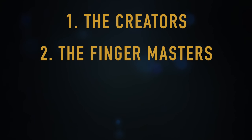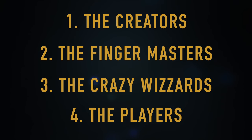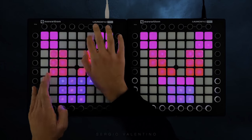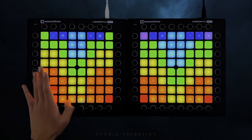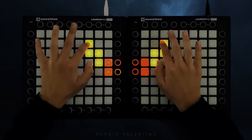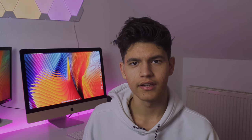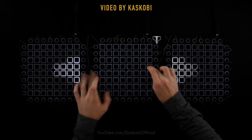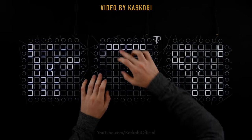The four types are: the Creators, the Fingermasters, the Crazy Wizards, and the Players. By the way, these names are created by me. The first type are the Creators — they are the most typical type of Launchpad user. We create Launchpad covers and our main goal is to make our performance enjoyable to play and watch, using fancy light effects and easy-to-remember sample patterns. We release the project files of our covers so that other people can play them. A good example of a Creator is Kaskobi — he gained a lot of views and subscribers with his stunning Launchpad covers. By the way, I am also a Launchpad creator.